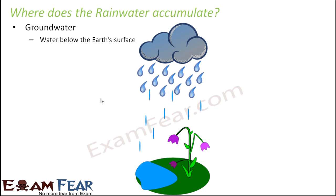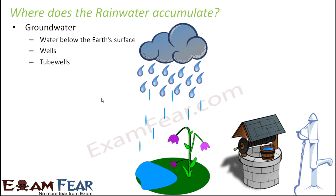That seeping into the soil forms groundwater. If people start digging below the earth's surface, after a certain level they start finding water. The water which exists below the earth's surface is called groundwater. We fetch groundwater in the form of wells, tube wells, and hand pumps. When you dig below the earth's surface and reach a level where you find water, that's how a well is constructed - and that water is groundwater.